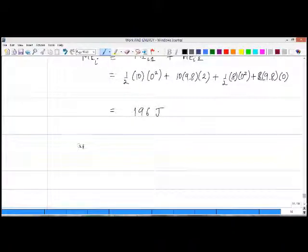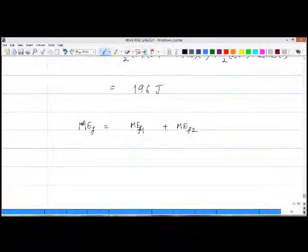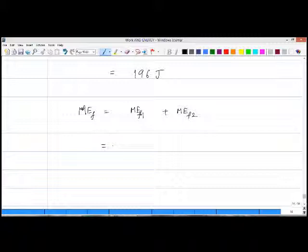Now let us repeat this for the end. ME_f = ME_f1 + ME_f2. When the 10 kg block hits the bottom, we know that it has no potential energy, it only has kinetic. So it'll be one half times 10 times v_f squared plus 10 times 9.8 times zero.